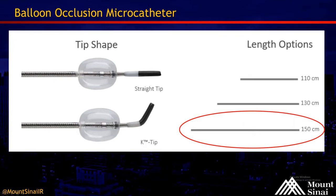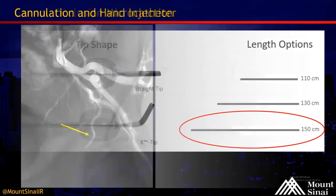There are two tip shapes available to us: the straight tip and the K-angled tip. There are three different length options. My favorite is the one highlighted here, mainly because it allows me to do both chemoembolization and prostate embolization from radial access, which some attendees may have experience with as well.